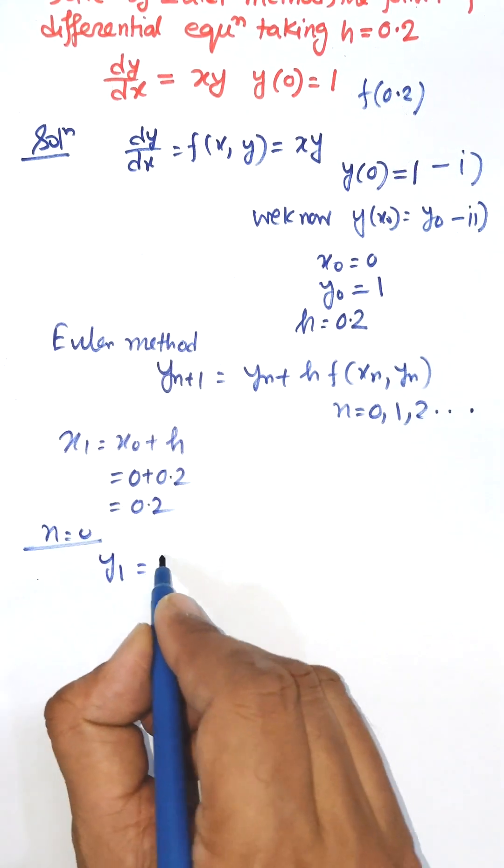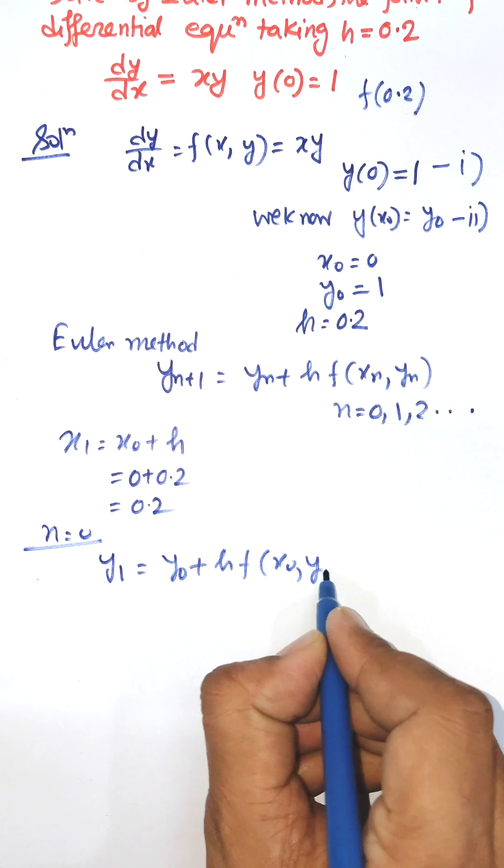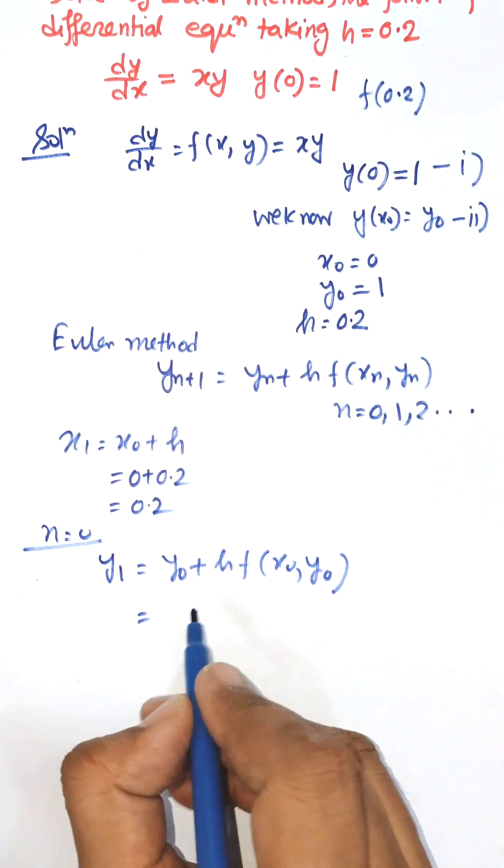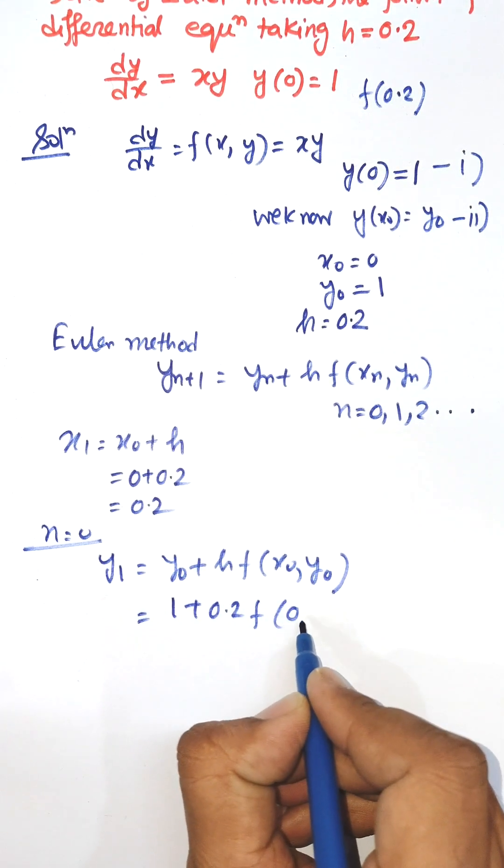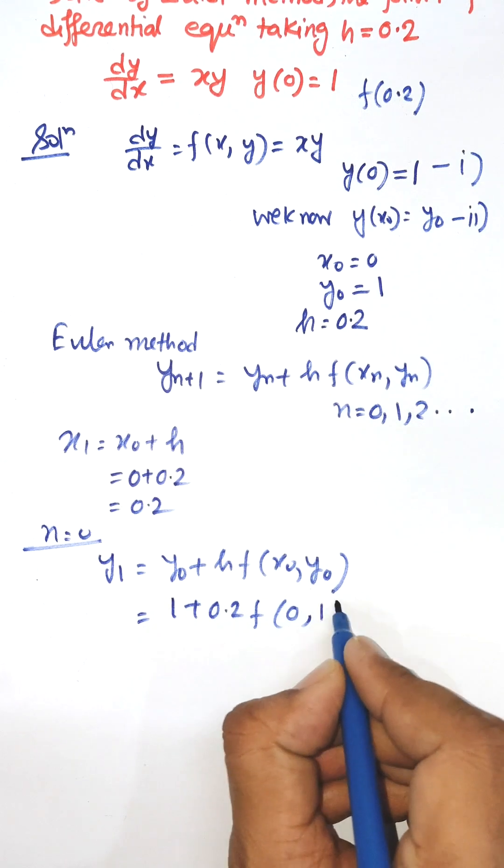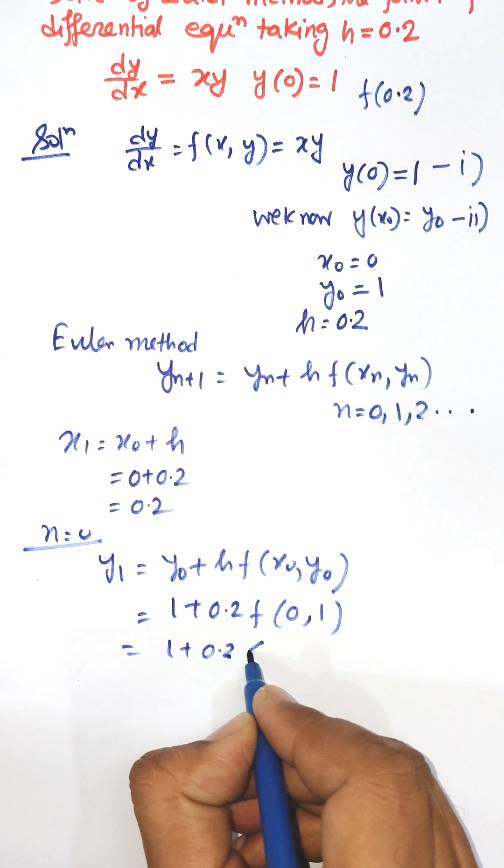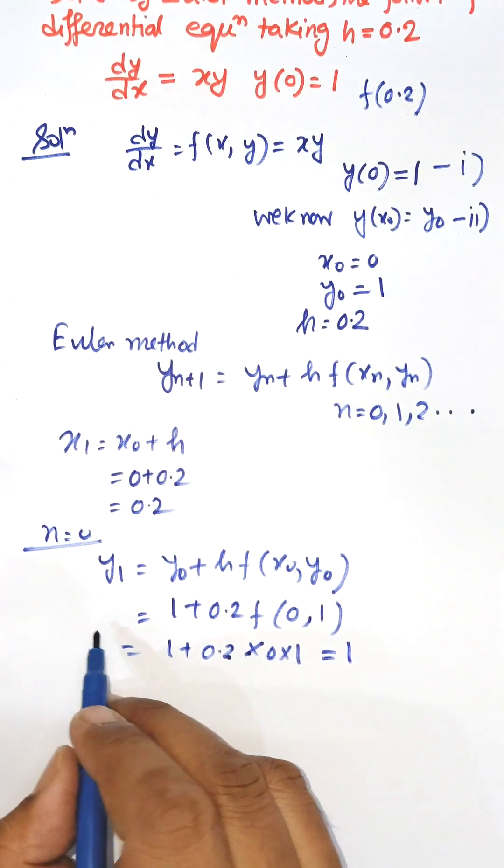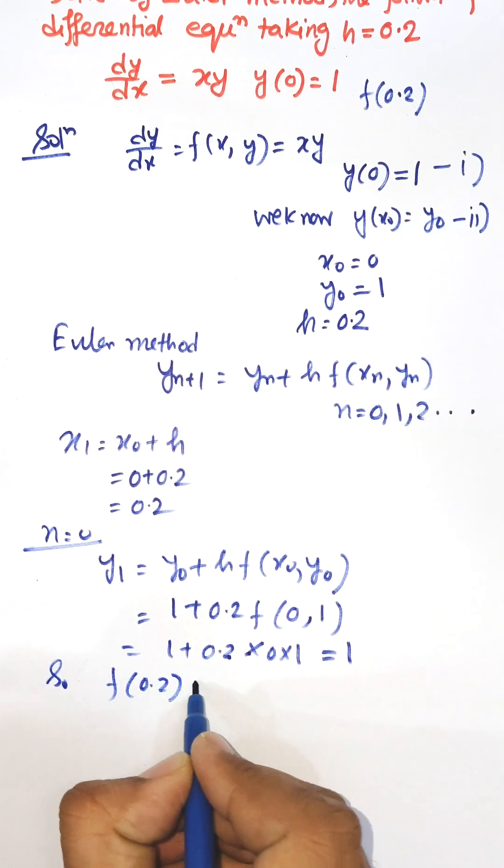y1 = y0 + h·x0·y0. Now, y0 is 1 and h is 0.2, x0 = 0, y0 = 1. That is 1 + 0.2·(0·1). That is equal to 1. So y1 = 1. So, y(0.2) = 1.